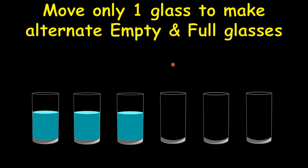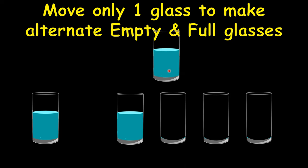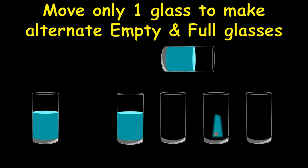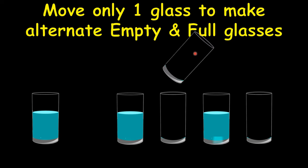Let's see the solution. We will move this glass here and then pour the water out of it into this glass. Then this glass is full, this glass is empty, and we keep this glass here. We just moved the second glass, and now you see full, empty, full, empty, full, empty - these are alternate full and empty glasses.